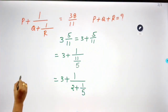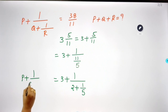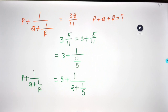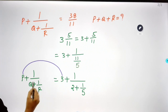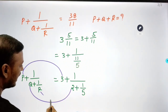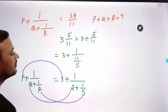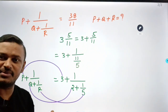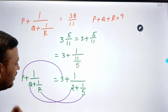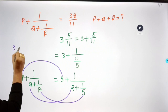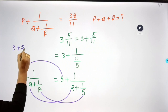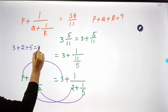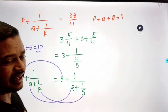Looking at 1/P + 1/Q + 1/R: P value is 3, Q value is 2, R value is 5. So P plus Q plus R equals 3 plus 2 plus 5, which is 10. Answer: 10.